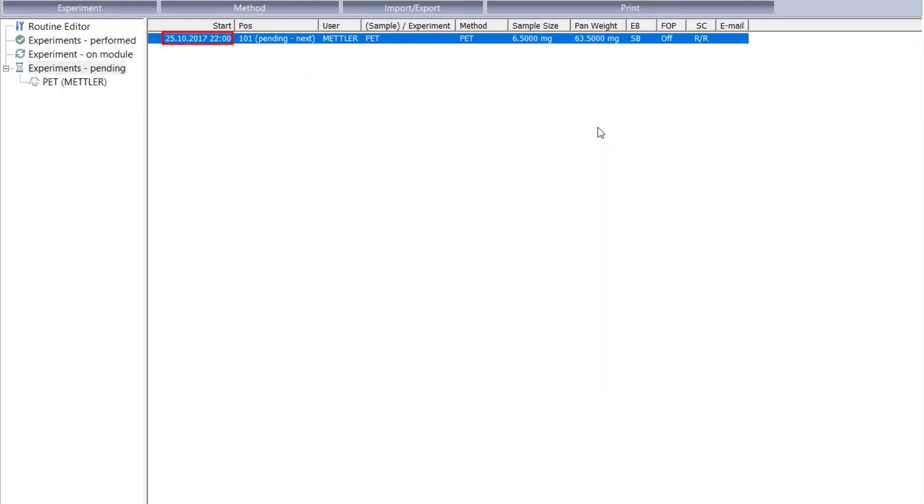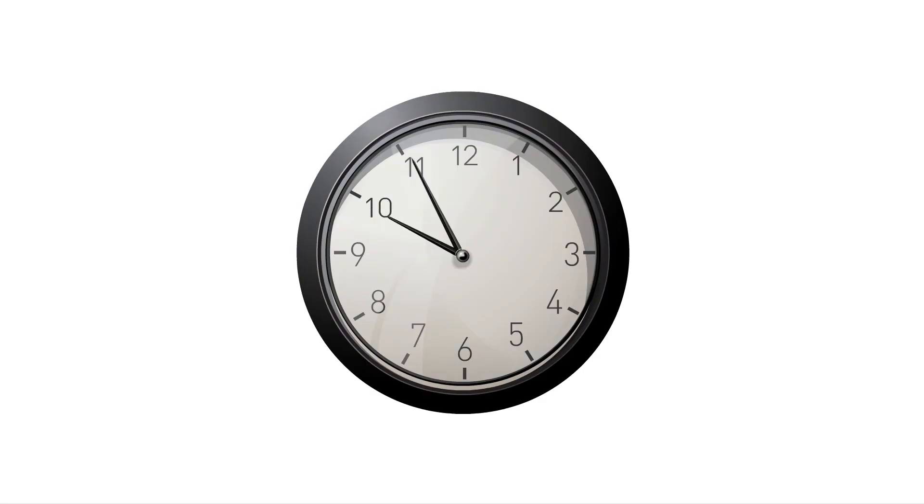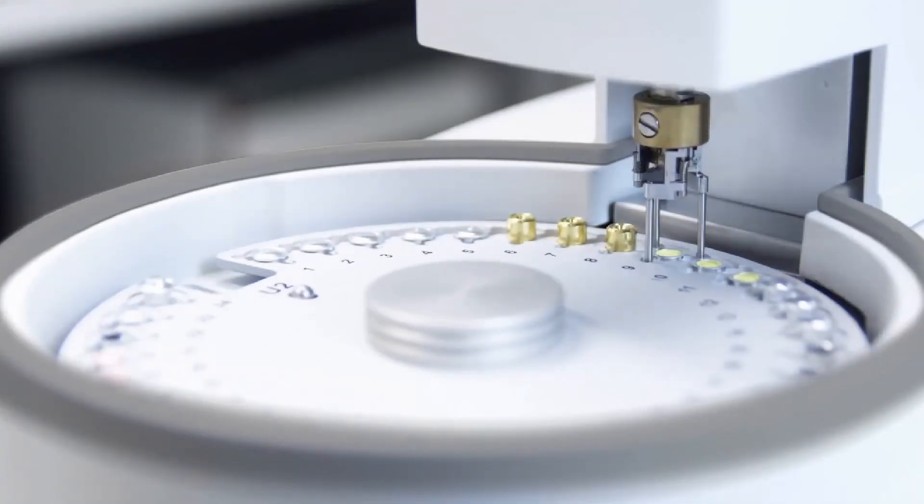The start date and time is then displayed on the experiment buffer in the START column. Confirm and save your settings by clicking OK. Now you have scheduled the start date and time for your chosen experiment.